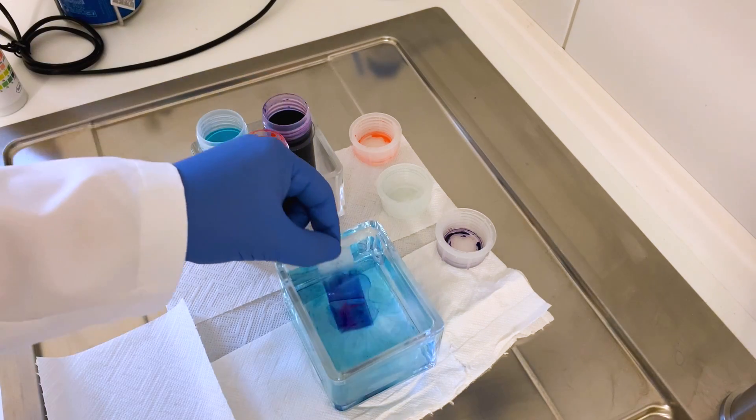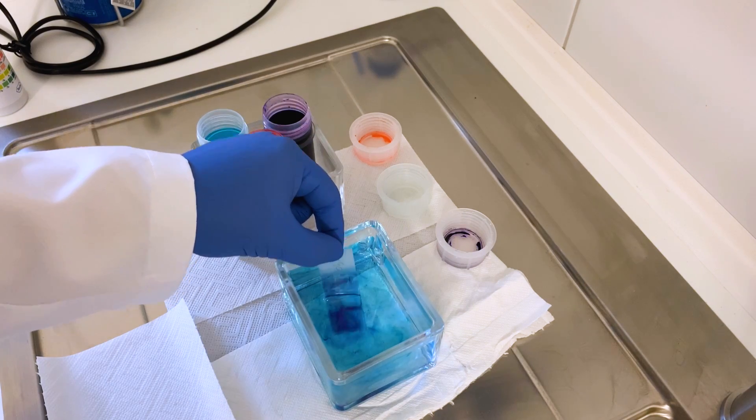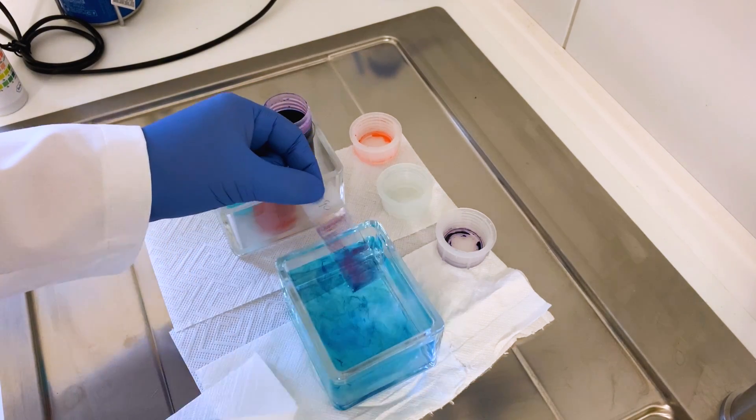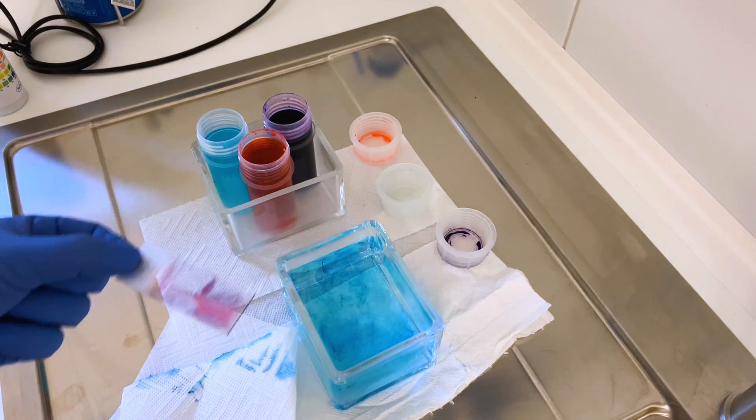After staining any excessive color has to be washed off. I'm using distilled water here. And the last step would be to wipe the water and the color from the downside of the slide before putting it again on the heating plate for drying.